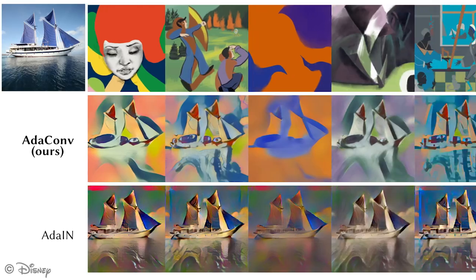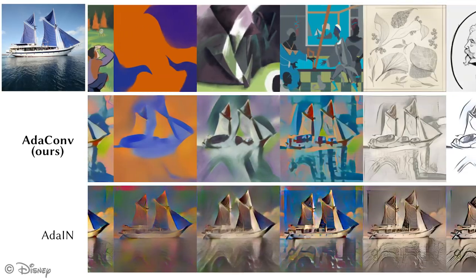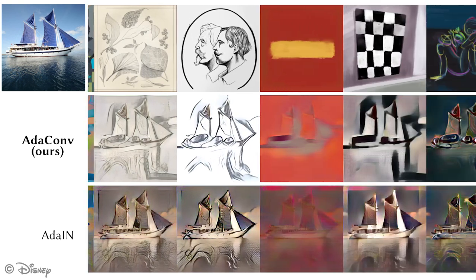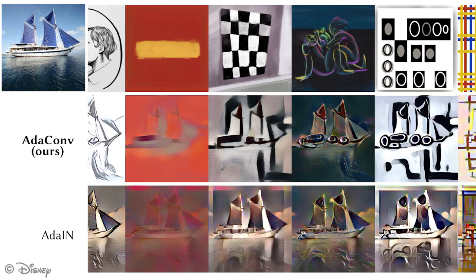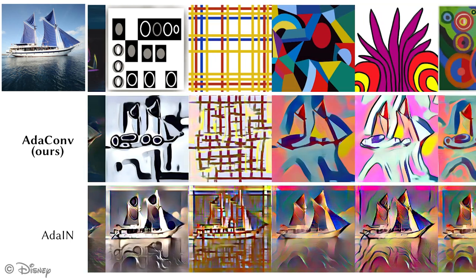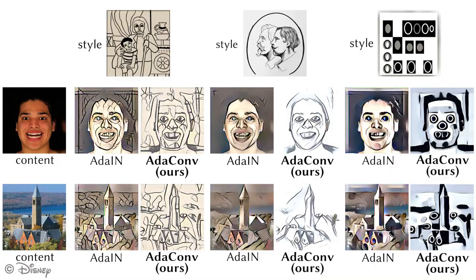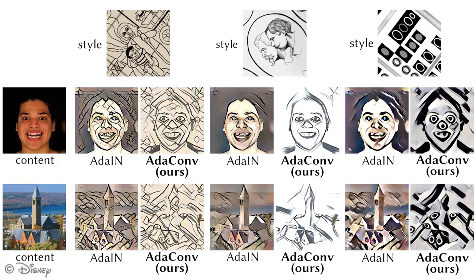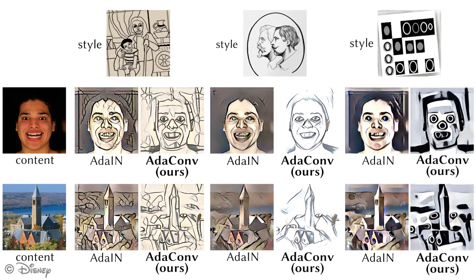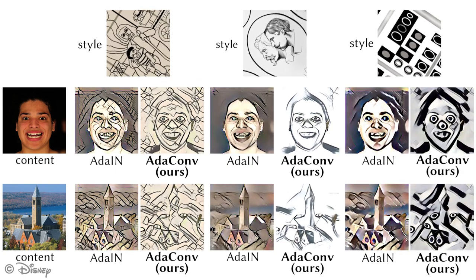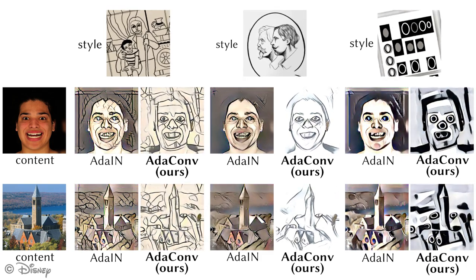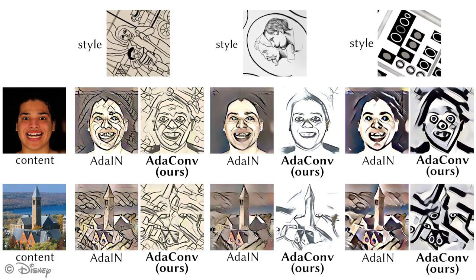Here we show the same set of styles applied on another content image. The new kernels predicted by AdaConv at test time also allow our method to be more responsive to changes in orientation of the style image. Here we show how the rotating style image produces corresponding changes in the AdaConv style transfer result. These effects are largely absent in the corresponding AdaIn result, as the AdaIn renormalization is a global operation and remains nearly constant during image rotation.